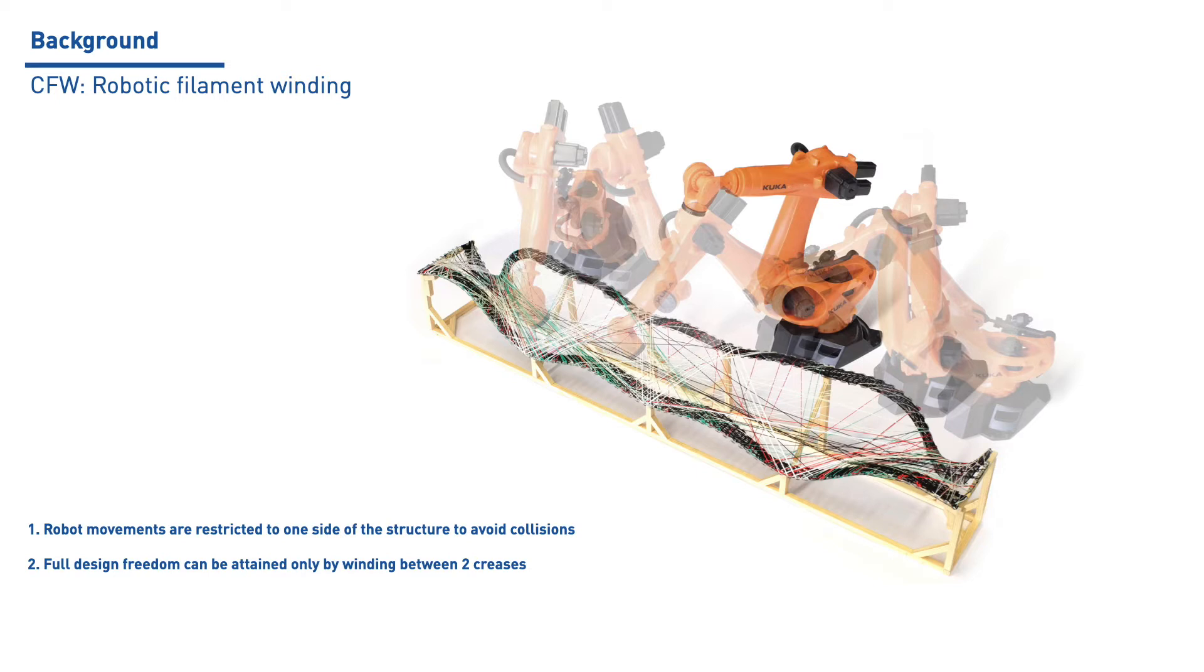Additionally, allowing the robot to work only on one side of the structure helps to minimize collisions. It is also identified that to achieve total design freedom, the winding should happen between two creases, avoiding collisions with previously laid fibers.